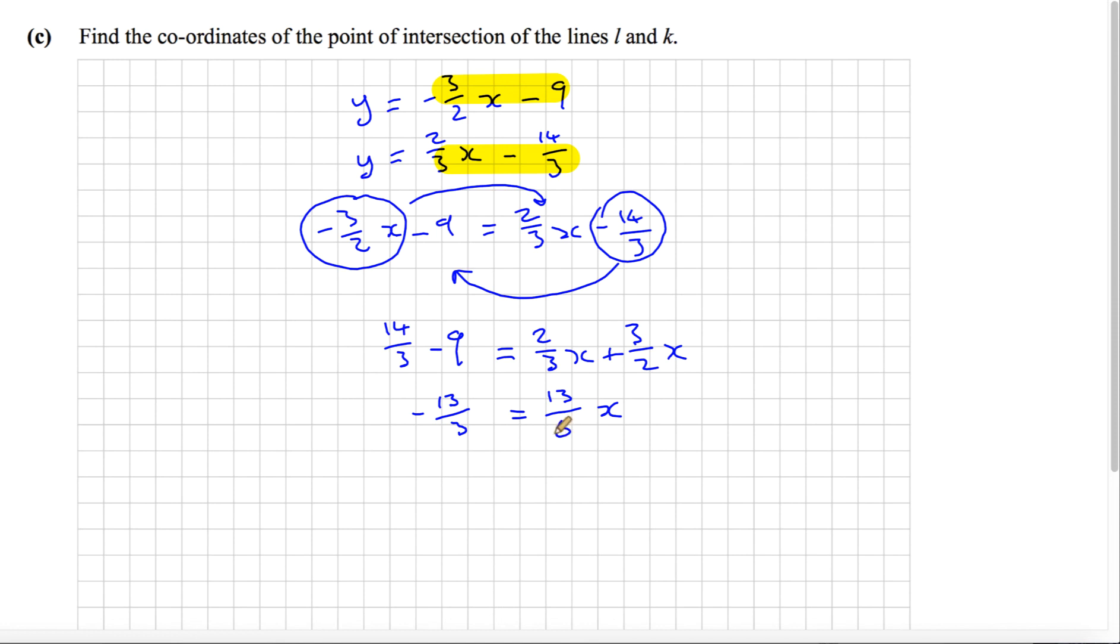If we multiply both sides by 6, we multiply this by 6 and this by 6. Here the 6 cancels, leaving me with 13x. Over here, 3 into 3 goes once, 3 into 6 goes twice, so I have 2 times negative 13, which is minus 26.